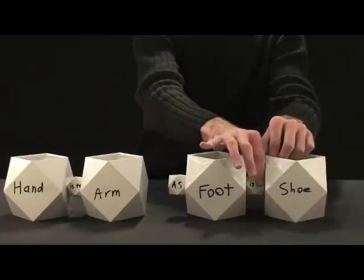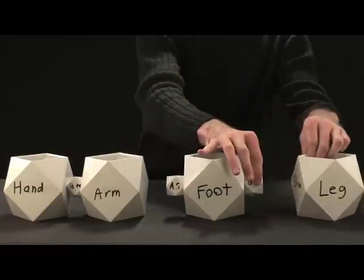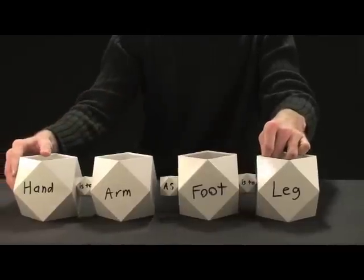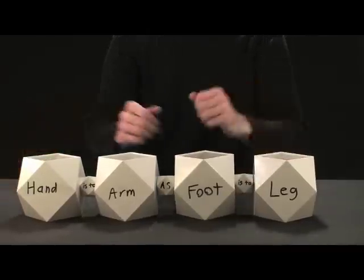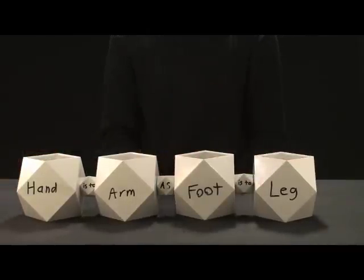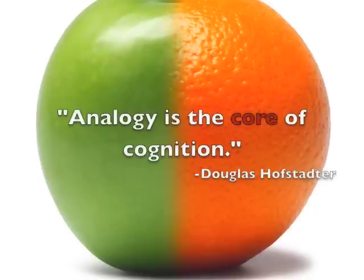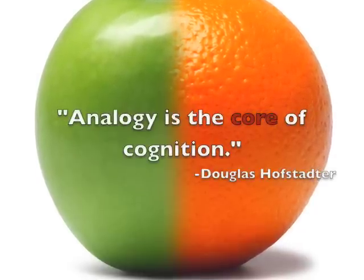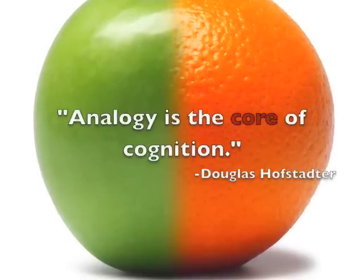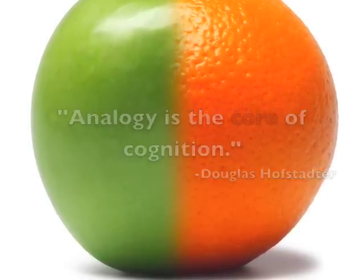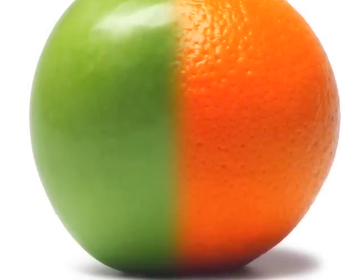Try building other analogies or deconstructing analogies your child is familiar with. This activity turns analogies into fun tactile puzzles, building a strong core for your child's thinking.